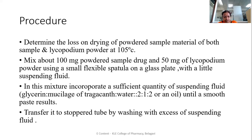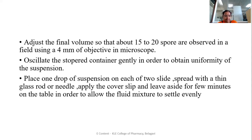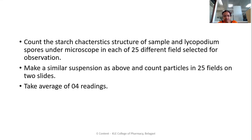Transfer it to a stoppered tube by washing with excess suspending fluid. Adjust the final volume so that about 15 to 20 spores are observed in a field using a 4 mm objective in the microscope. Oscillate the stoppered container gently to obtain uniformity of the suspension. Place one drop of suspension on each of two slides and spread with a thin glass rod or needle. Apply the cover slip and leave aside for a few minutes to allow the fluid mixture to settle evenly. Count the characteristic structures of the sample and the lycopodium spores under the microscope in each of 25 different fields selected for observation.